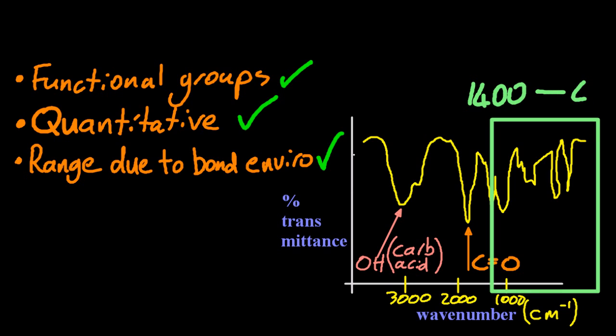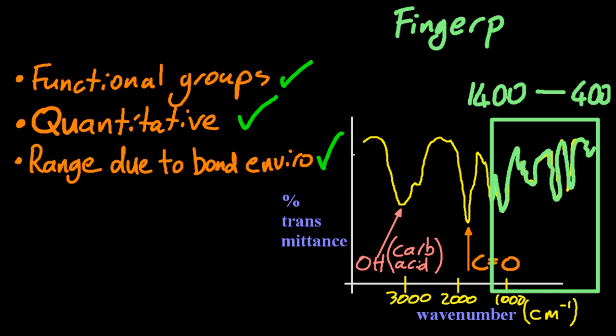And this region that I've outlined in the green box between 1400 and 400 per centimeters is the fingerprint region, and in reality all they do is look at this region and match it up. It's unique to each molecule and you just look that bit up on a database, and sometimes they ask you about that part.